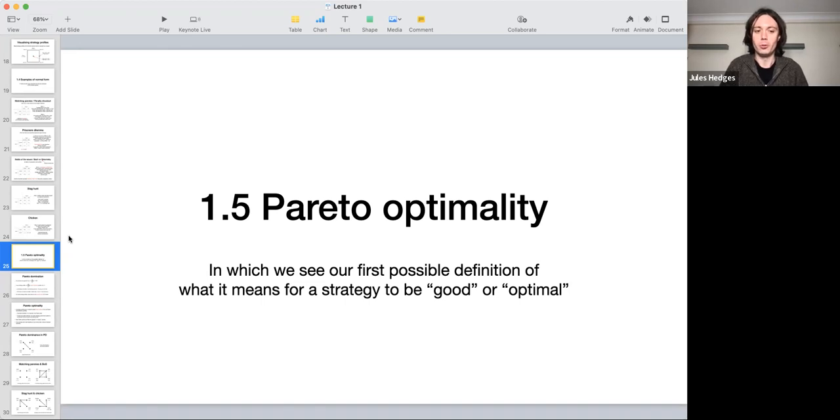So far, we've seen formal mathematical definitions of normal form games and various kinds of strategies and strategy profiles. We've talked in informal terms in the examples about how some things are better for the players than others. We haven't yet seen any formal definition of what it means for a strategy to be optimal in any sense. The reason is that's a very subtle question, and there are multiple different possible answers, and we're going to spend basically the entirety of next week looking at answers to that question.